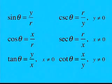Then the six trigonometric functions of theta are as follows. The sine of theta is equal to y over r. The cosine of theta is equal to x over r. The tangent of theta is equal to y over x where x is not equal to zero. Then we have the cosecant of theta, which is r over y, and y does not equal zero. The secant of theta is r over x, x not equal to zero. And finally, cotangent of theta is equal to x over y, and again, y is not equal to zero.